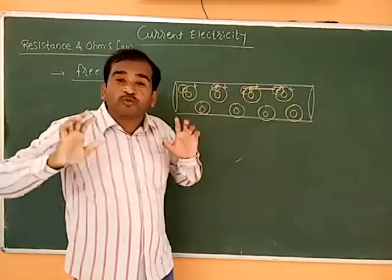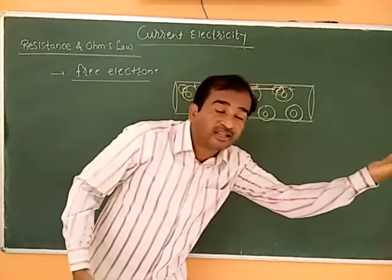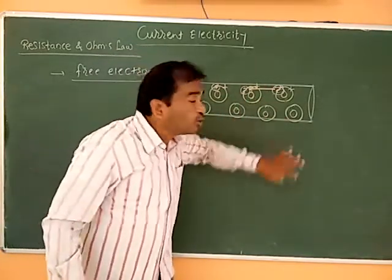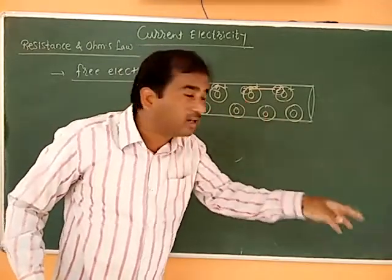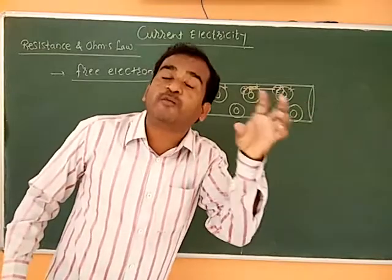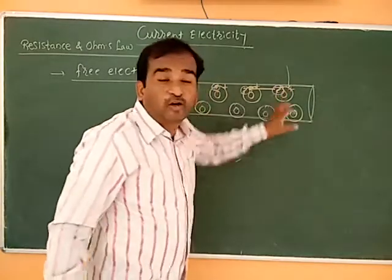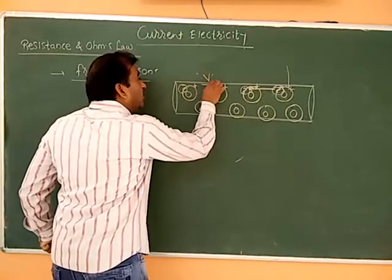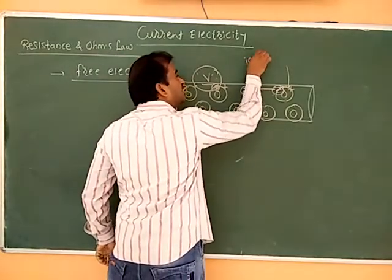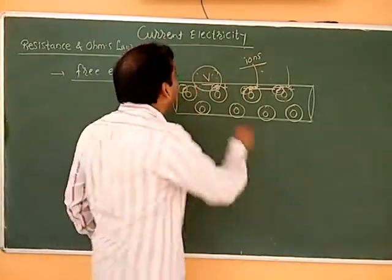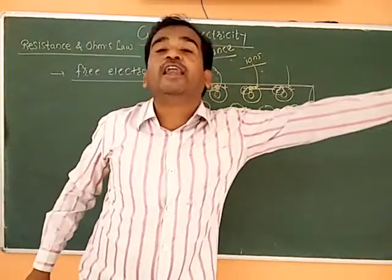The electron becomes free from its atom. As it moves, it is attracted by each atom along its path. Each electron is carried out through its effort, and due to the attraction of each atom, the electrons become subject to the potential difference. The atomic ions produce a hindrance in the path of the moving electrons, and this hindrance is what we call resistance.